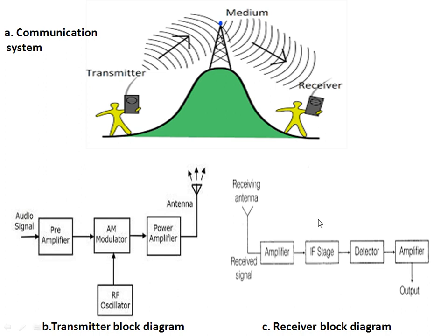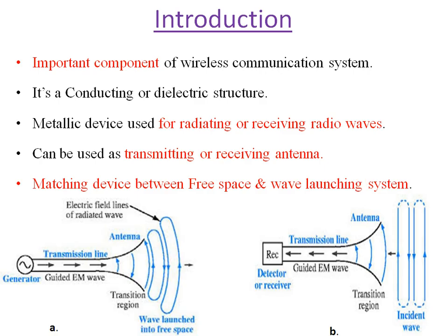Now in diagram C, if you see, this is a general block diagram of the receiver. Here the receiving antenna is the first element — the receiving antenna will receive the electromagnetic waves from the media and then convert them into electrical format, and then pass them to the amplifier for further processing, so that the original data sent by the transmitter will be exactly received at the side of the receiver.